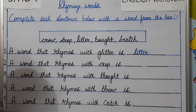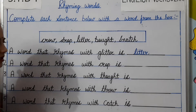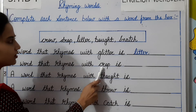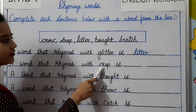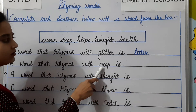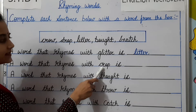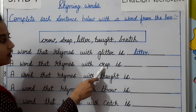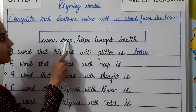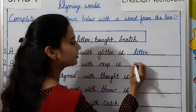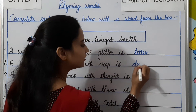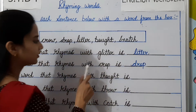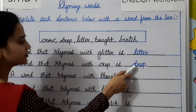Number 2: a word that rhymes with crop. Now you have to find out the same ending sound for crop. Crop, drop. So you will write here drop. Crop, drop.